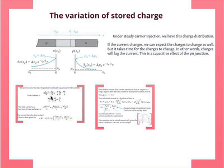Far away from the junction, the minority carriers will all recombine and disappear, so there is no diffusion current far away—only drift. Holes are injected on the other side and diffuse with their own diffusion length. Remember we had a plot showing how current is divided across the PN junction, with drift and diffusion of electrons and holes, and only drift far away.